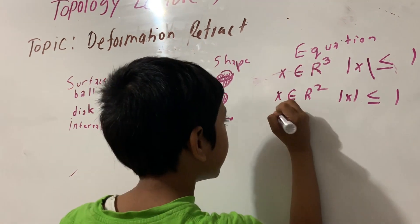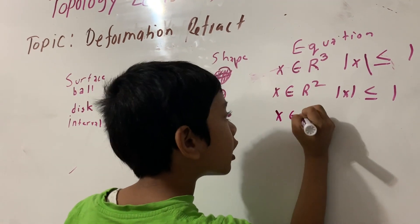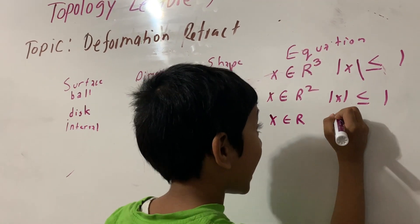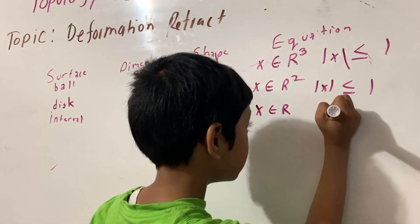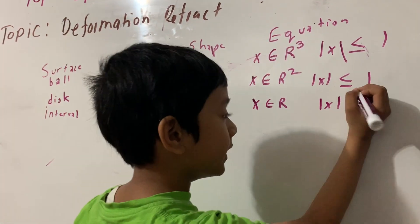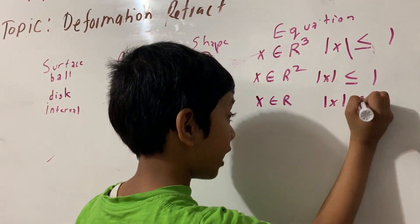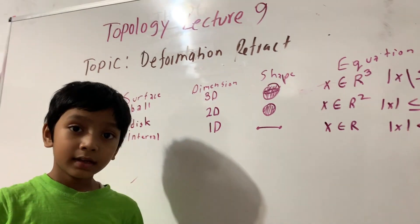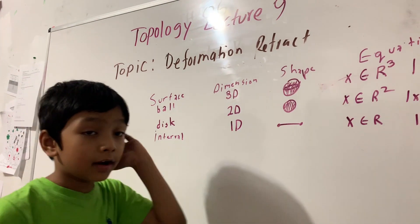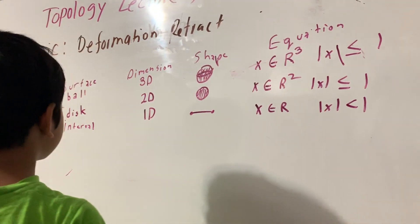And its equation is x belongs to R, such that x is less than 1. It cannot be equal to 1. It has to be less than 1.